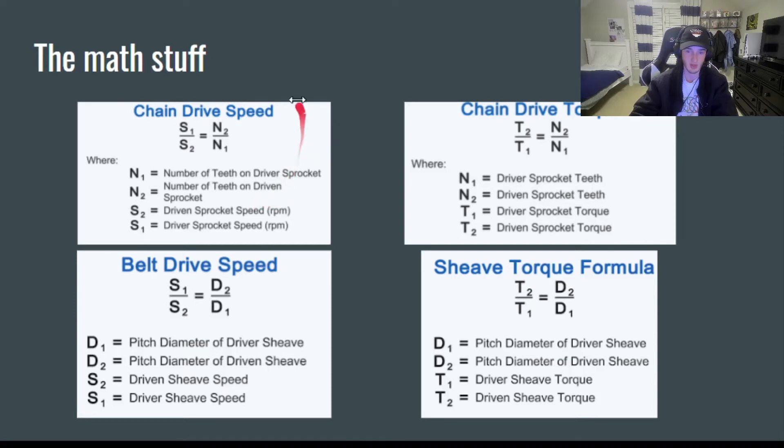To get your drive ratio of one half or 0.5, that would make this proportion S1 over S2 equals 0.5.